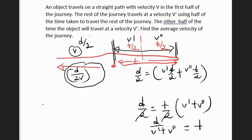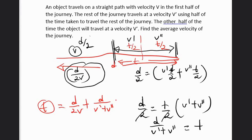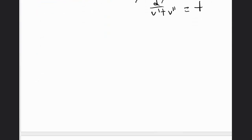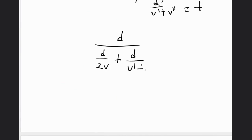So the total time will be D over 2V plus D over V' plus V''. Now we are getting closer to our answer. To find the average velocity, we have to divide the total distance by the total time. Total distance is D. Total time is D over 2V plus D over V' plus V''.